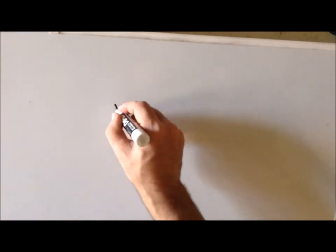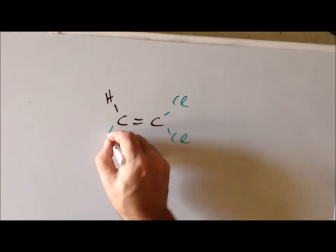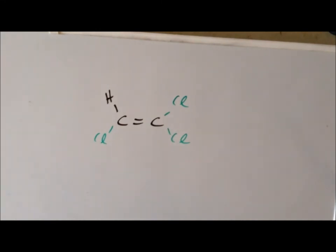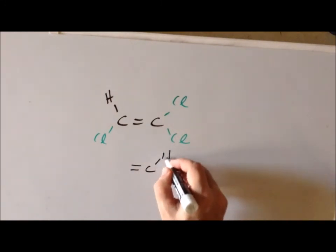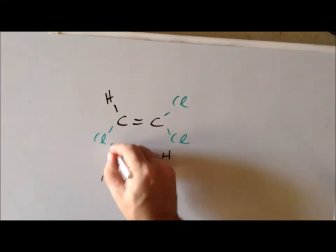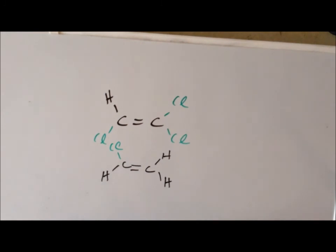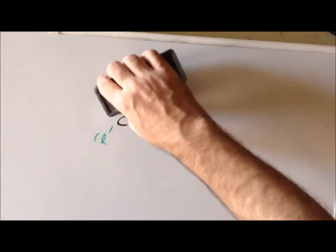Next, we try a tri-substituted ethylene by replacing three hydrogen atoms with a halogen. The key feature is that three substituents are identical and one is different. Swapping the roles of hydrogen and chlorine gives identical point group symmetry. In both cases, the point group symmetry is Cs.